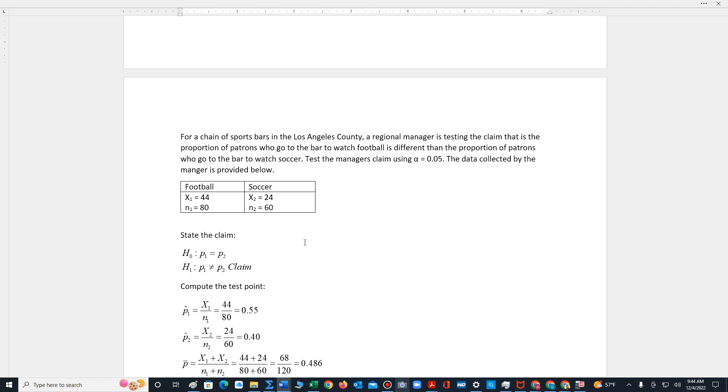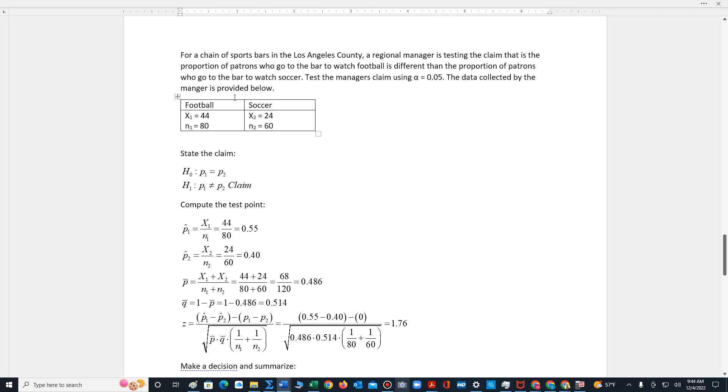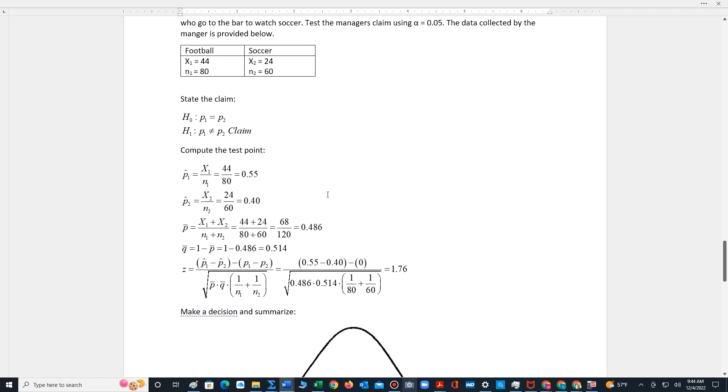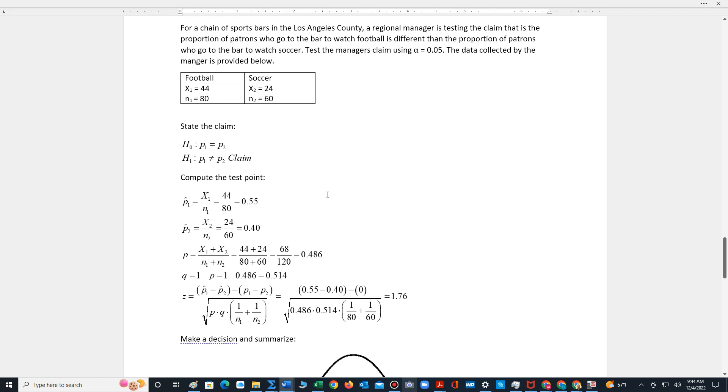We're given this information and have to state the claim. We're testing the difference between two proportions. So we have p₁, the proportion of people who go to the bar to watch football, is not equal to p₂, the proportion of people who go to the bar to watch soccer. That's our claim. H₀ is that p₁ equals p₂.